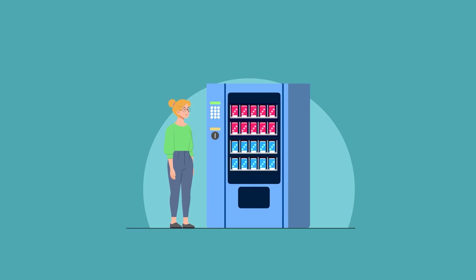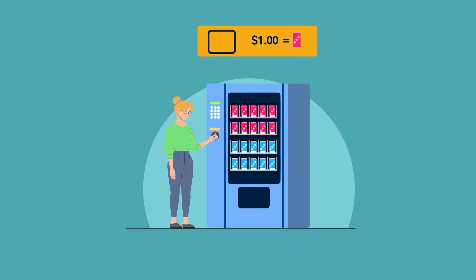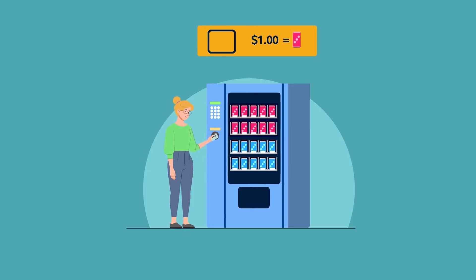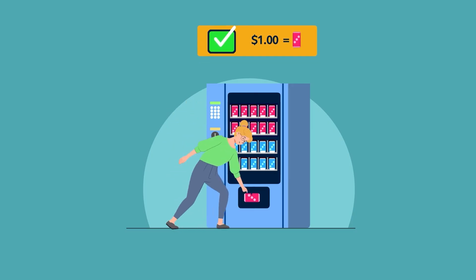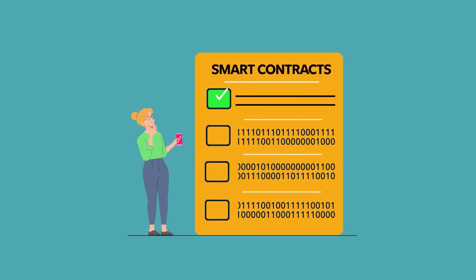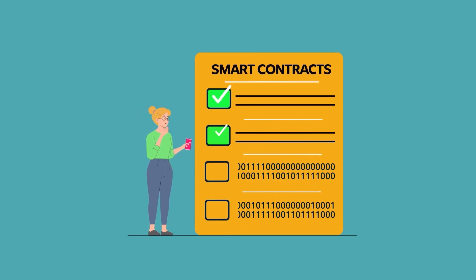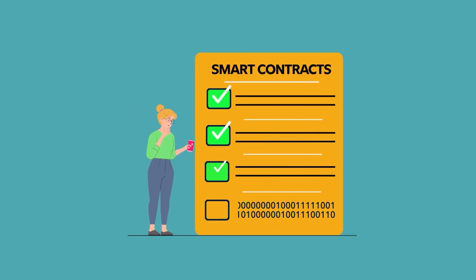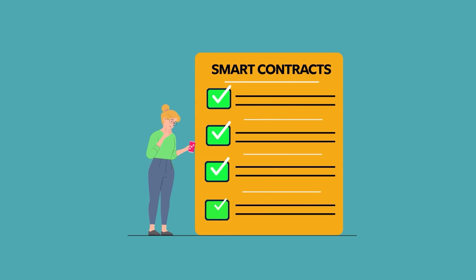A smart contract follows the same principles as a vending machine. Insert the incorrect amount, and there's no snack. Insert the correct amount, and a snack will be released. Smart contracts are computer code programmed to automatically execute a predetermined action once certain requirements are met, just like a vending machine.